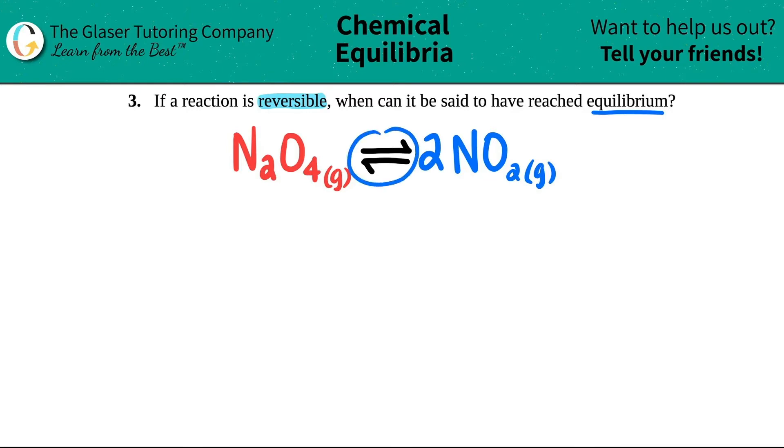It's this little arrow right here. A reversible reaction means that as the forward reaction is happening, so maybe I'll say that this is forward, as N2O4 is turning into two NO2s, the reverse reaction is happening as well, in which two NO2s is now getting converted back to N2O4.